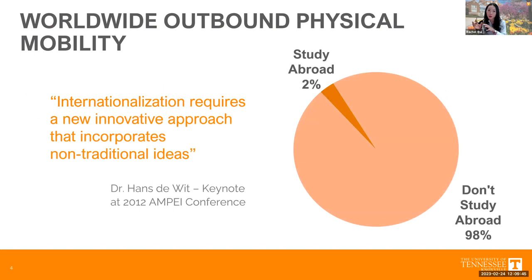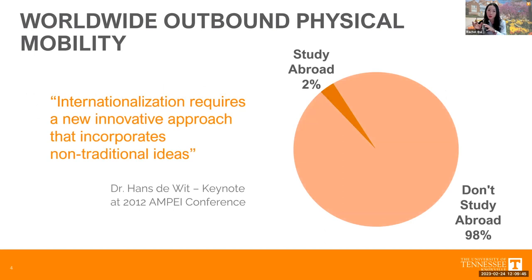Before we get into COIL, I want to show you a few numbers. A recent study found that worldwide outbound physical mobility — students studying abroad — is about 2%, meaning about 98% of students throughout their years in university will not have the opportunity to study abroad. What does the UT number look like? Pre-pandemic, we had about 4.3%, sending about 1,500 students to study abroad. Coming out of the pandemic, we have about 1,200 students scheduled to study abroad among 37,000 students — about 3.2%.